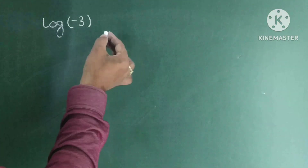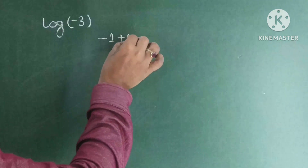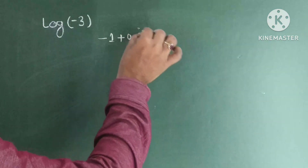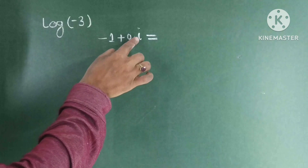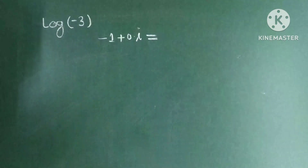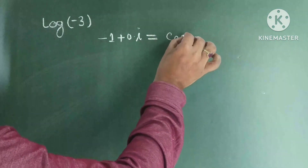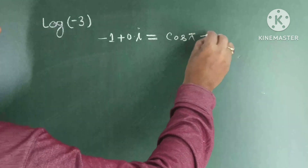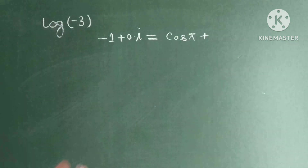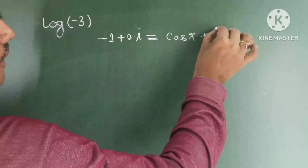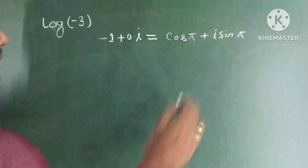We know that minus 1 equals cos π plus i sin π. This is eta, cos pi plus eta sin pi.